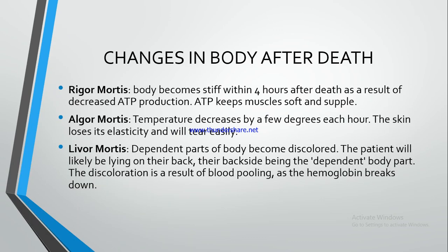Changes in body after death. Rigor mortis — rigor mortis kya hota hai? Body jab death ke baad stiff ho jati hai, usko hum bolte hai rigor mortis. Body becomes stiff within 4 hours after death as a result of decreased ATP production. ATP keeps muscles soft and supple. ATP production kam ho jata hai death ke baad, to 4 ghante baad death ke, jab ATP production kam ho jata hai, to muscle bilkul stiff ho jata hai. ATP muscles ko soft rakhta hai. So this is rigor mortis.